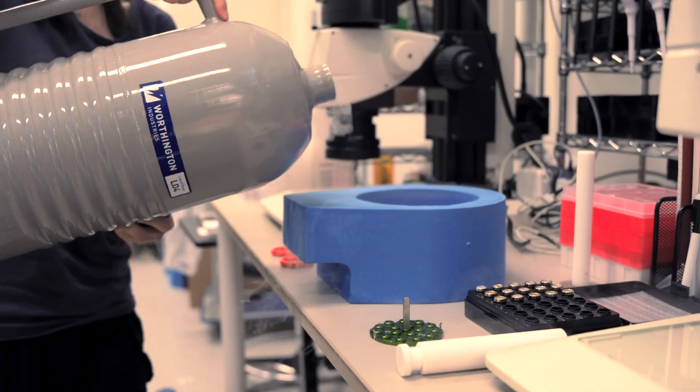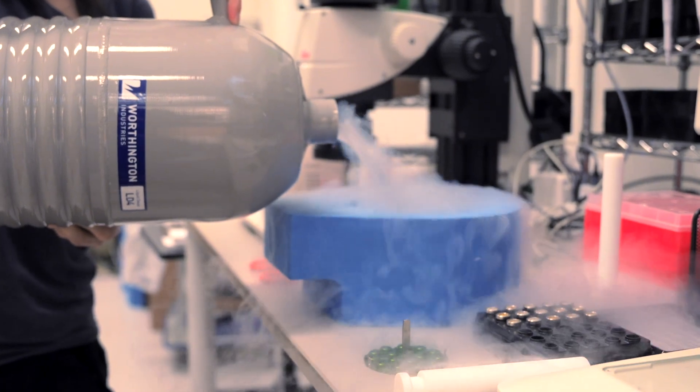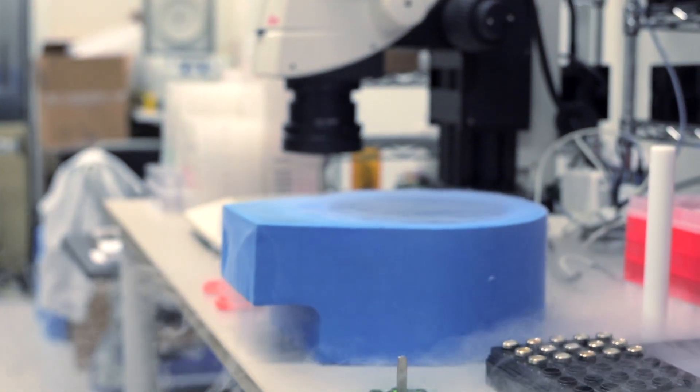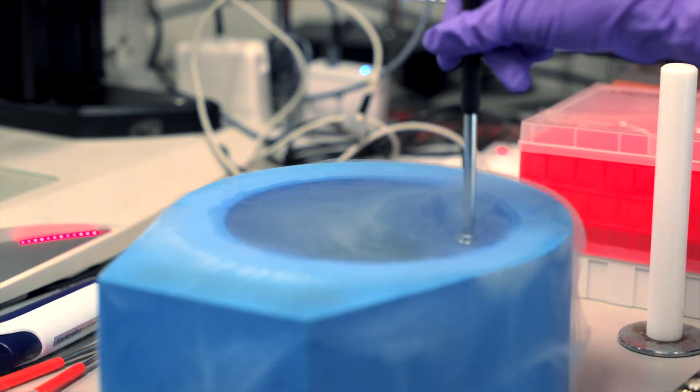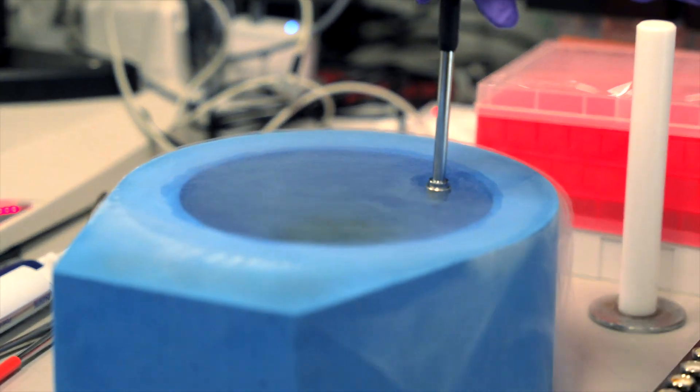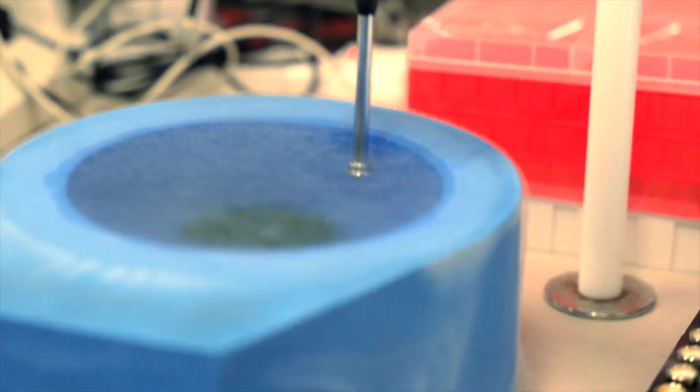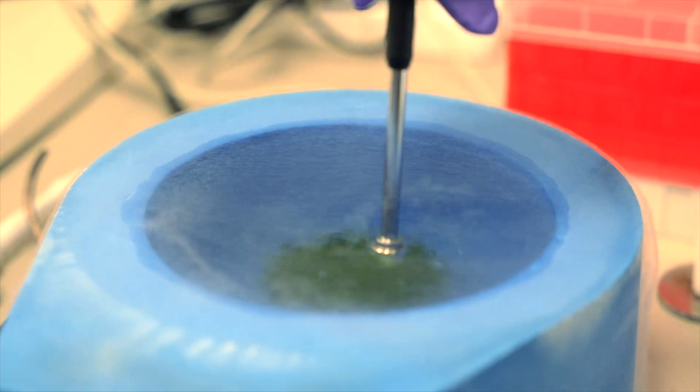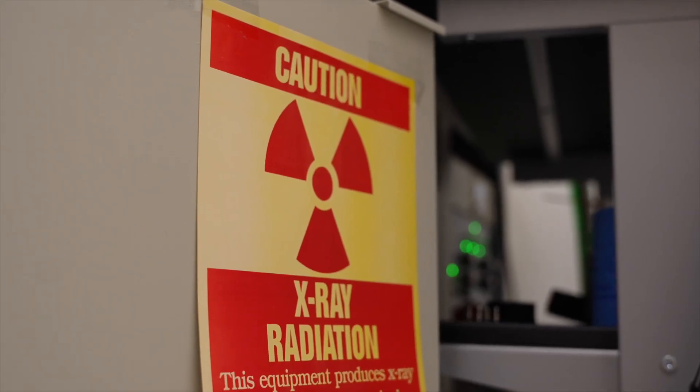Once we have the crystal in the loop, we flash freeze it in liquid nitrogen. This stuff is cold. About negative 200 degrees Celsius cold, or minus 300 degrees Fahrenheit. This instantly stops the evaporation process and preserves the structure of the crystal, literally freezing as much of the molecular motion as possible.